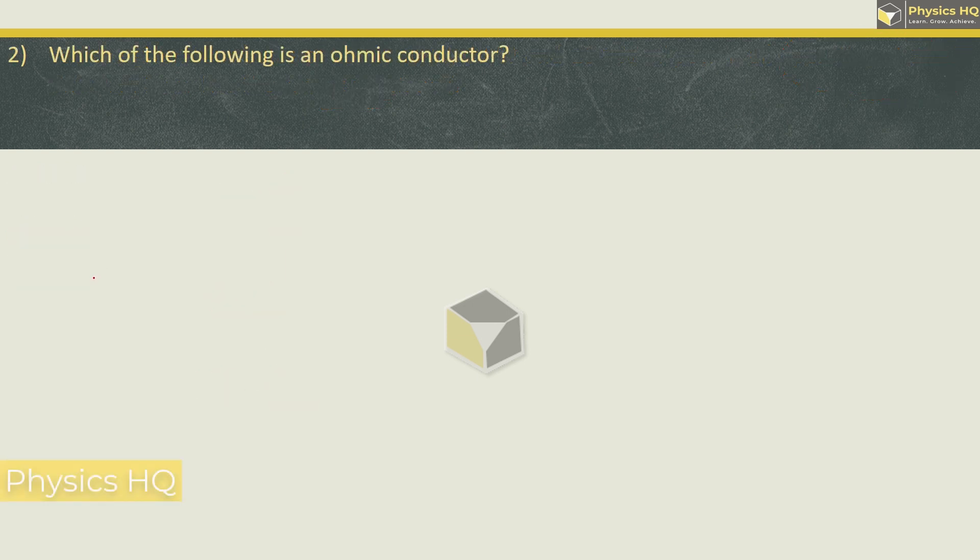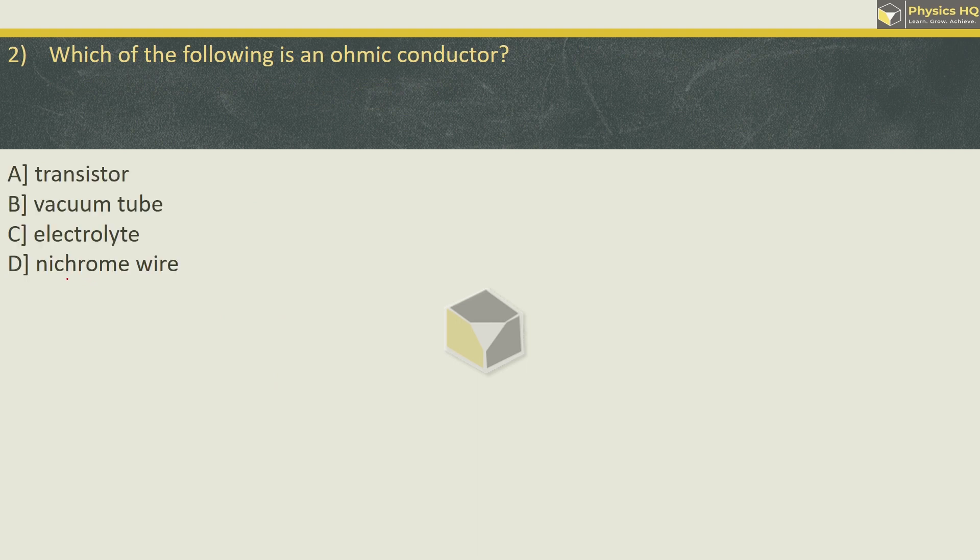Next MCQ: Which of the following is an ohmic conductor? Transistor, vacuum tube, electrolyte or nichrome wire. So the correct option is option D, nichrome wire. This properly follows Ohm's law.